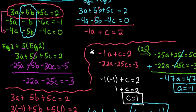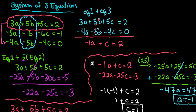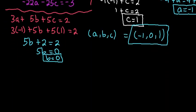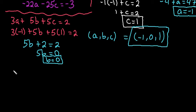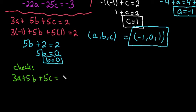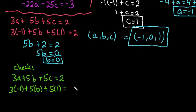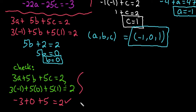Because this was quite a bit of work, and the more work you do the more likely you are to make a mistake, I always go back and plug the solution into all three equations. For equation one, 3 times negative 1 plus 5 times 0 plus 5 times 1: that's negative 3 plus 0 plus 5, which does equal 2. It works in the first equation. But it has to work in all three of them.